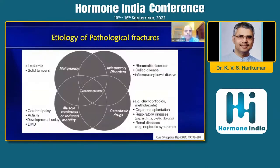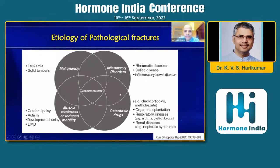When you look at the etiology of pathological fractures, the commonest is malignancy — be it leukemias or solid tumors. You have a lot of inflammatory disorders which affect the bone such as rheumatoid, celiac, and related conditions. If somebody is immobile, has had strokes or other conditions, that also increases the risk of fractures in that particular area. Use of drugs which can affect the bone is another factor. Endocrinopathies sit right in the center, which may have all these direct or indirect actions.